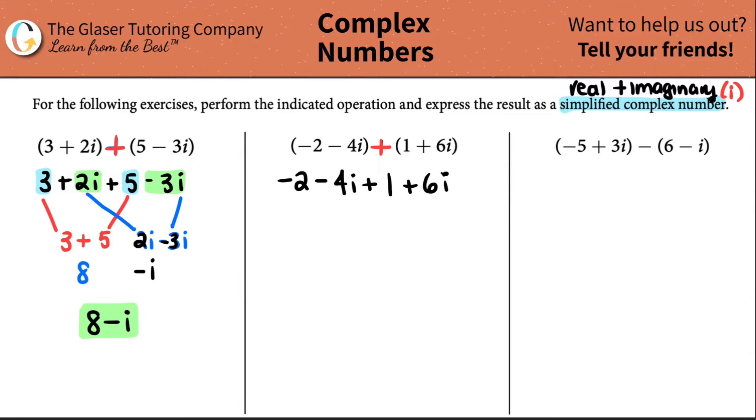So I could just say that negative 2 minus 4i plus 1 plus 6i. And now we just group those like terms. I just have a negative 2 here, and then what other just number do I see? I see a 1, right?